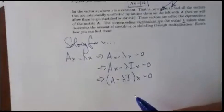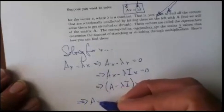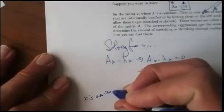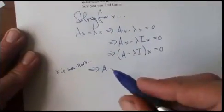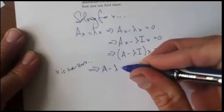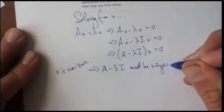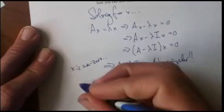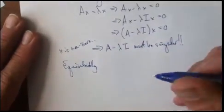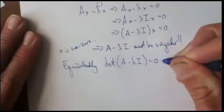In order for a nonzero vector x to satisfy this equation, if x is nonzero, that's the only interesting case, if x is a nonzero vector that actually points out away from the origin some amount, then this implies that A minus lambda I cannot be invertible, must be singular or noninvertible. Or equivalently, this is equivalent to the determinant of A minus lambda I being equal to 0.